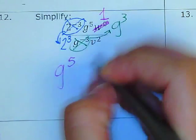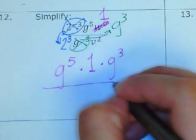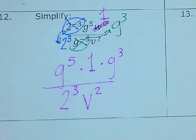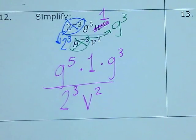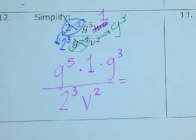Now at the top, I have g to the 5th times 1 and then times g to the 3rd. At the bottom, I have 2 to the 3rd power and v squared. Now I'm going to multiply the numbers that I can and put the letters that are alike together.